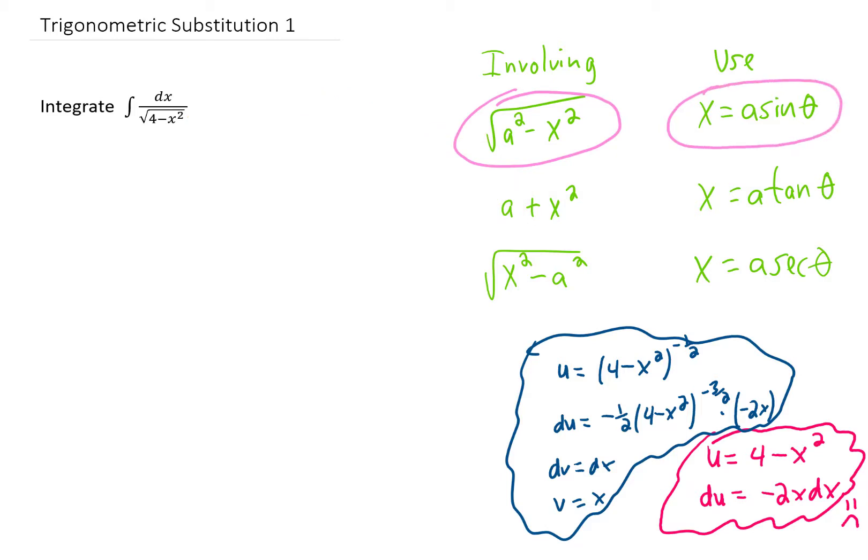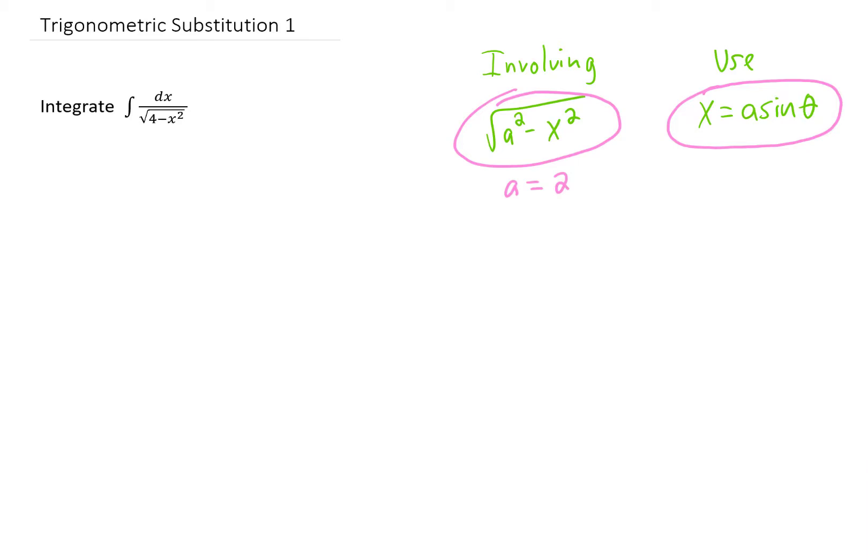Therefore, we are going to try to use this trigonometric substitution right here. Since we noticed that we have a equals 2 in this problem, we are going to try to use the substitution x equals 2 sine of theta. And we can give a bunch of information about this right off the bat. One thing that we can say is that dx is going to be 2 cosine of theta d theta.